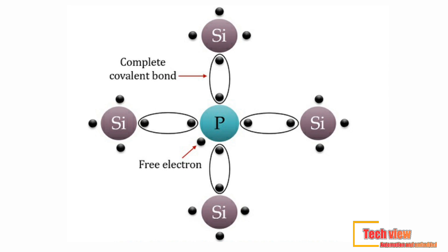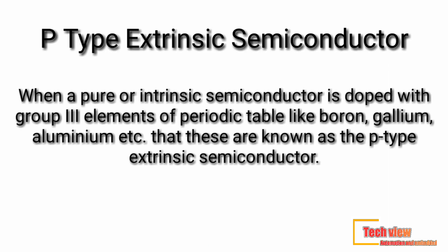This electron is known as a free electron, and its movement raises the conductivity of the material. In n-type semiconductors, there are a large number of free electrons and a few holes. Electrons are the major charge carriers in n-type semiconductors.